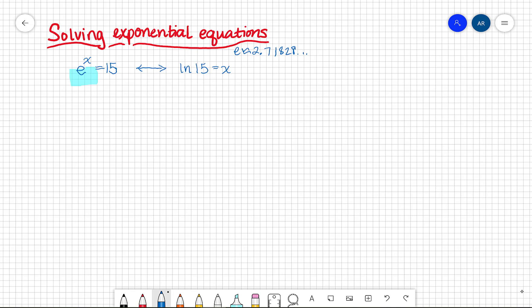So that's a really basic example. But let's say instead we had something with more pieces to it. For instance, 3e to the 5x plus 1 equals 99.